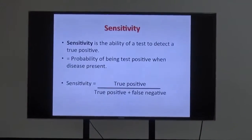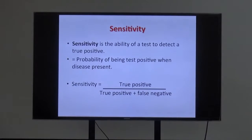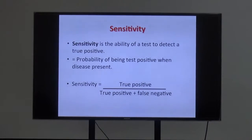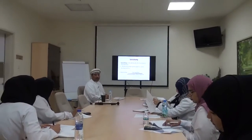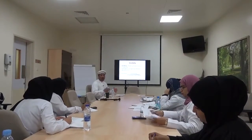Sensitivity is the ability of a test to detect true positives — those who really have the disease. From the word 'sensitive,' it is the ability of the test to identify those who are truly having the disease. Statistically, it is the probability of being test positive when disease is present. The formula is: true positives over true positives plus false negatives.